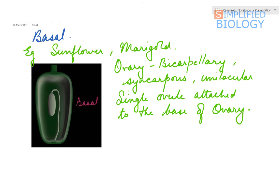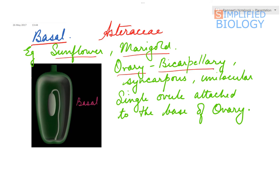Last is basal placentation, which is characteristic of family Asteraceae — the sunflower family. Examples are sunflower and marigold. The ovary in this case is bicarpillary (two carpels), syncarpous (united), unilocular (single cavity), and even a single ovule is present, which is attached to the base of the ovary.